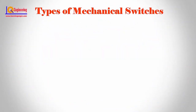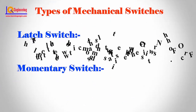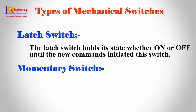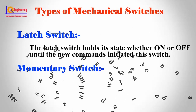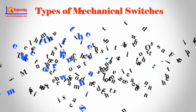Mechanical switches can also be categorized on the basis of holding the current state. There are two types: latch switch and momentary switch. The latch switch holds its state whether on or off until a new command is initiated.